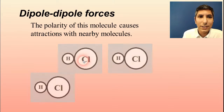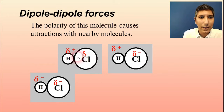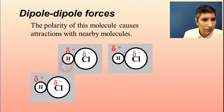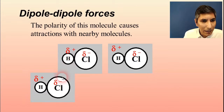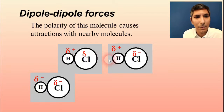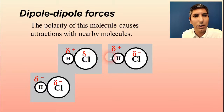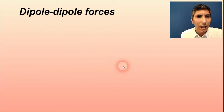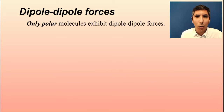Now if we have several of these molecules next to each other, we're going to have that same lopsidedness. The positive side here is going to be attracted to the negative side of its neighbor — a fairly strong intermolecular force. Likewise, the negative side is going to attract the positive side of its neighbor — once again a fairly strong intermolecular force. These forces are called the dipole-dipole force, and dipole-dipole forces are only found in polar molecules.